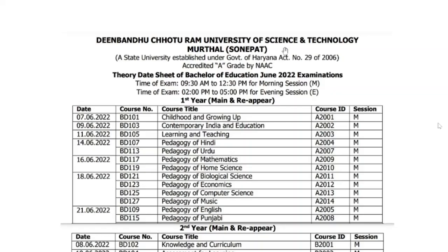University of Science and Technology. The date sheet of Bachelor of Education, June 2022 examination. You will have exams in June. The morning session time is 9:30 to 12:00, and the evening session is 2:00 to 5:00.